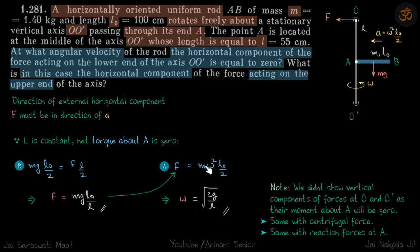The external horizontal component F must be in the direction of centripetal acceleration, giving our first equation: F = m·ω²·(l₀/2). The second equation comes from the torque balance about point A.